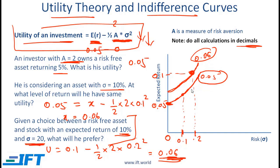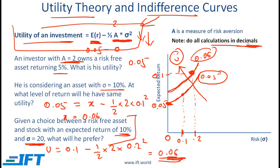Notice that the indifference curves will generally point north-east, because to remain equally happy, additional risk needs to be compensated with higher returns. Another key point is that as indifference curves move north-west, the investor is happier. Remember this formula and always do calculations in decimals.